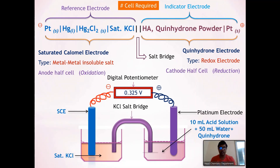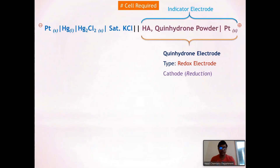Now let's talk about the quinhydrone electrode. This is an indicator electrode. What is an indicator electrode? It is an electrode whose EMF varies with the concentration of H⁺ ions. Here, as the concentration of H⁺ ions from the acid solution varies, the EMF also varies. Such variation is sensed by this indicator electrode, the quinhydrone electrode.